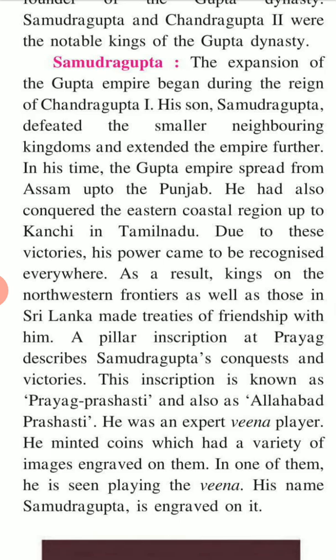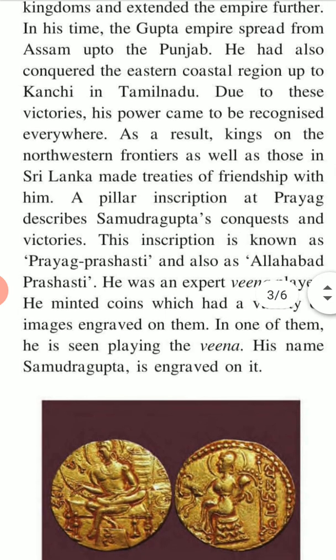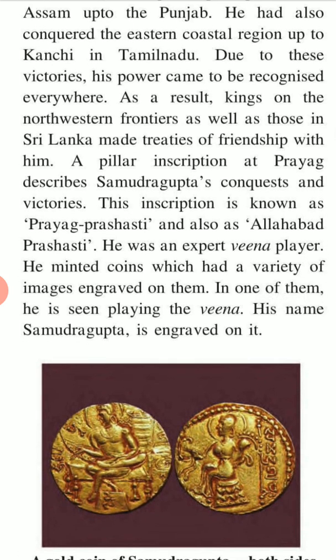Samudragupta: The expansion of the Gupta Empire began during the reign of Chandragupta I. His son Samudragupta defeated smaller neighboring kingdoms and expanded the empire further. In his time, the Gupta Empire spread from Assam to the northwest. He also conquered the eastern coastal region up to Kanchi in Tamil Nadu. Kings on the northwestern frontiers, as well as those in Sri Lanka, made treaties of friendship with him. A pillar inscription at Prayag describes Samudragupta's conquests and achievements. This inscription is known as the Prayag Prashasti, also as the Allahabad Prashasti.